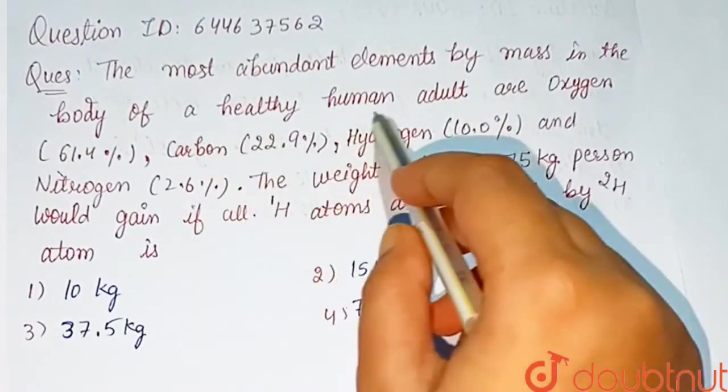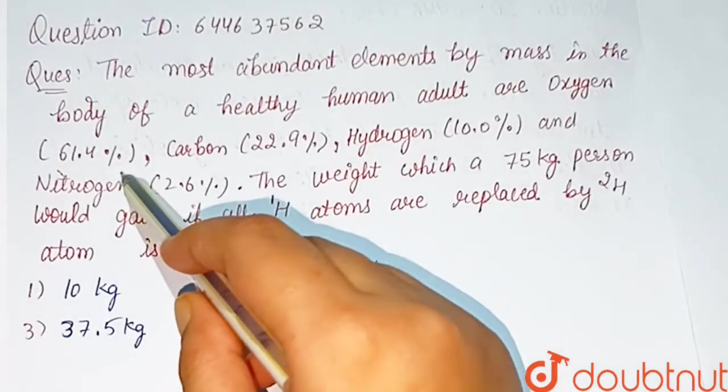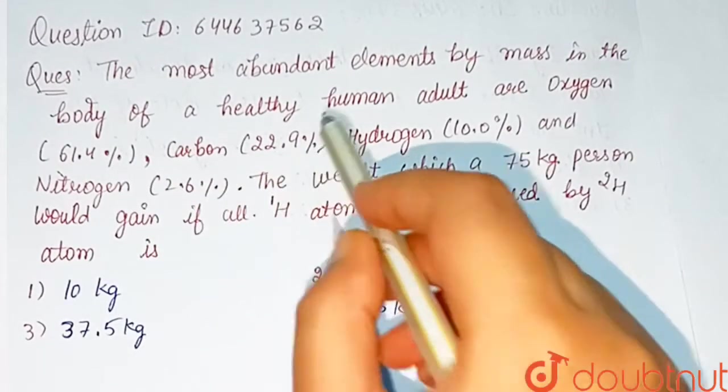element by mass in the body of a healthy human adult are oxygen 61.4%, carbon 22.9%, hydrogen 10%